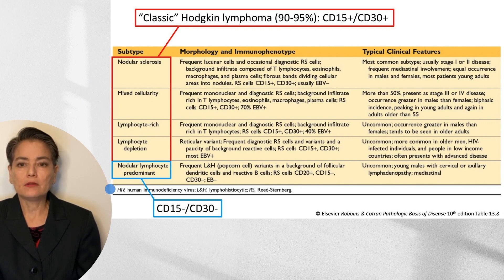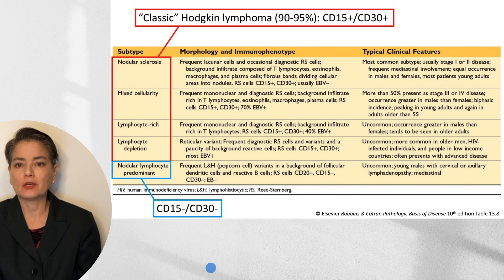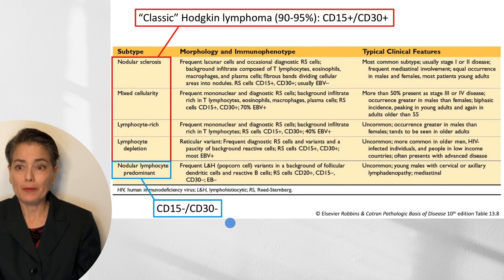The outlier is nodular lymphocyte-predominant Hodgkin lymphoma, in which the neoplastic cells are referred to as LNH or popcorn cells. In contrast to Reed-Sternberg cells, they are negative for CD15 and CD30, but positive for CD20, which is a B-cell marker.